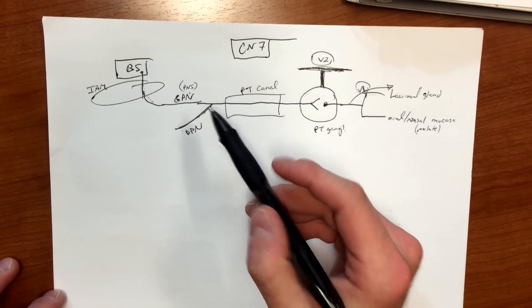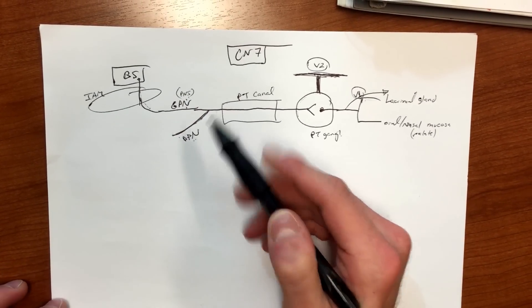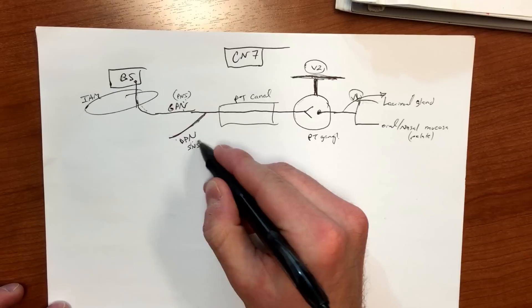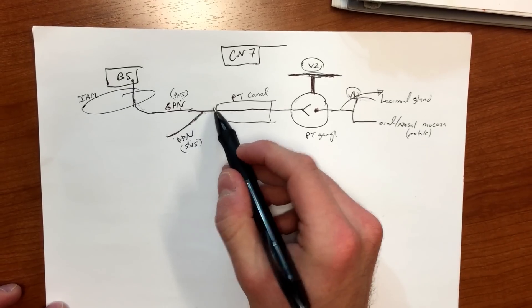So deep petrosal nerve is gonna come in out of nowhere and it's gonna join greater petrosal nerve. Now greater petrosal nerve is PNS - do you guys know what deep petrosal nerve is? This one carries sympathetic fibers.